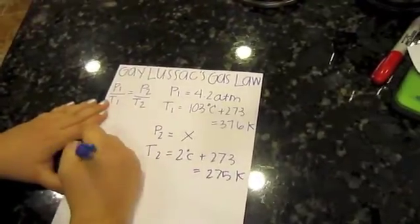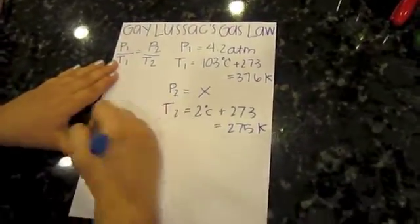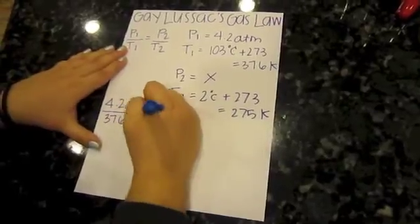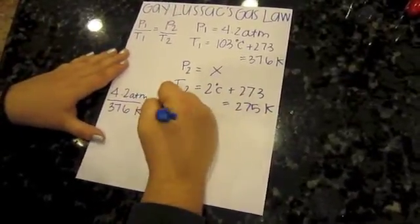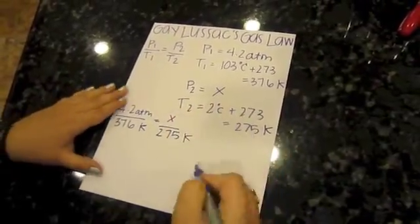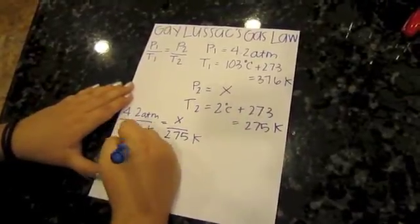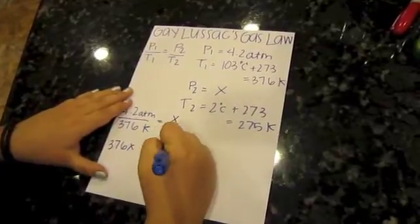So 4.2 ATM over 376 Kelvin equals X over 275 Kelvin. We're going to cross multiply. So 376X is equal to 1155.